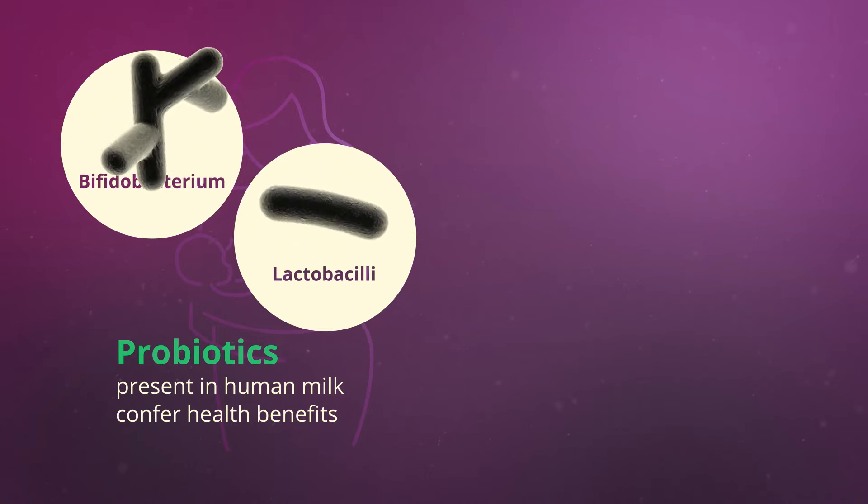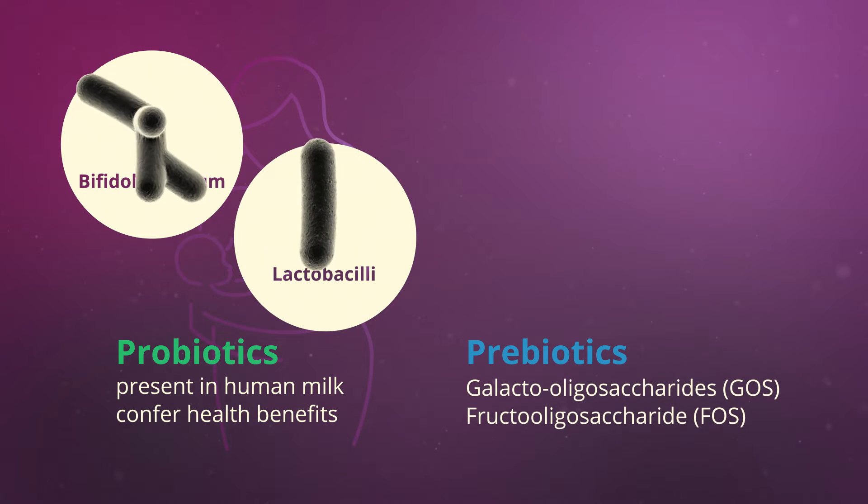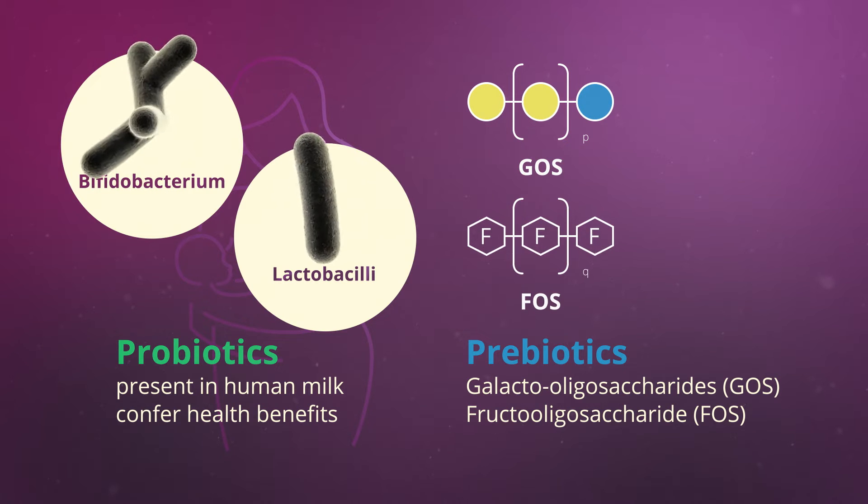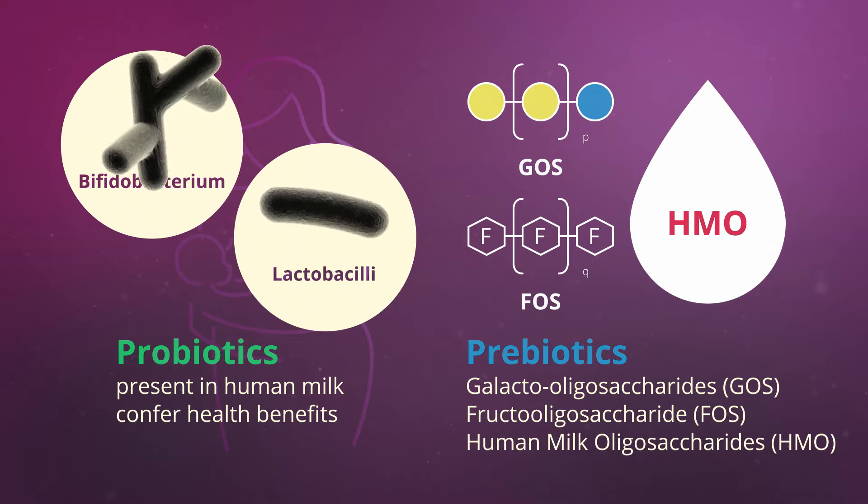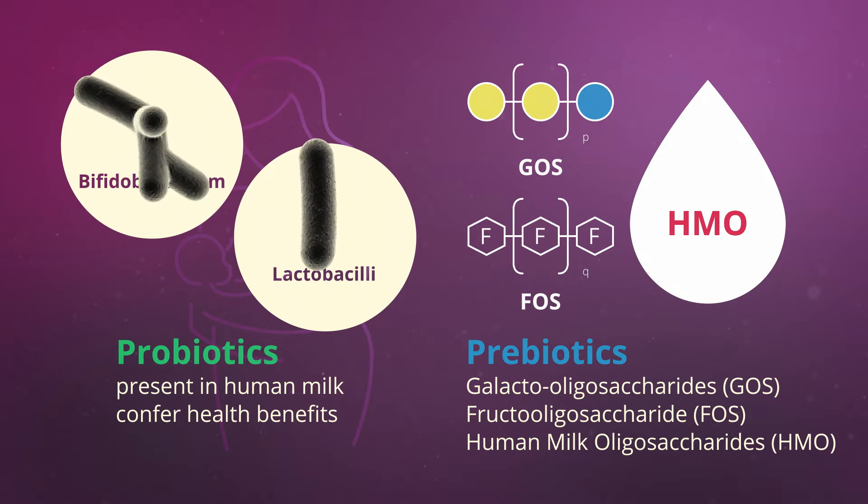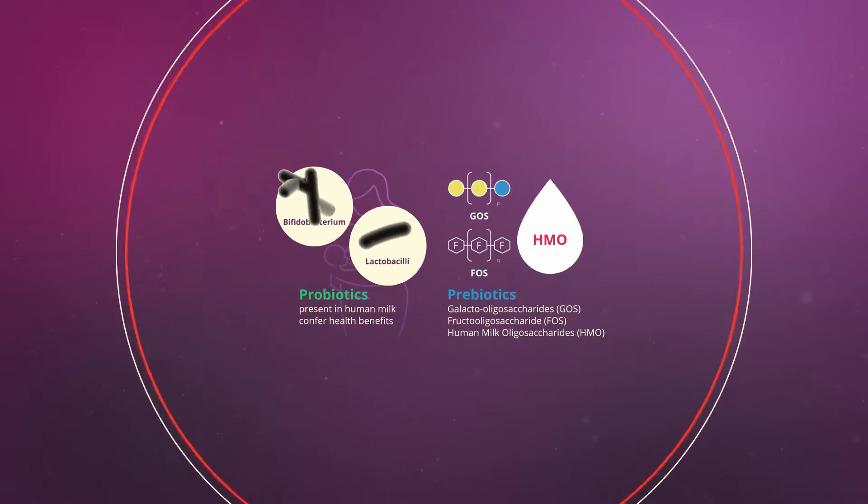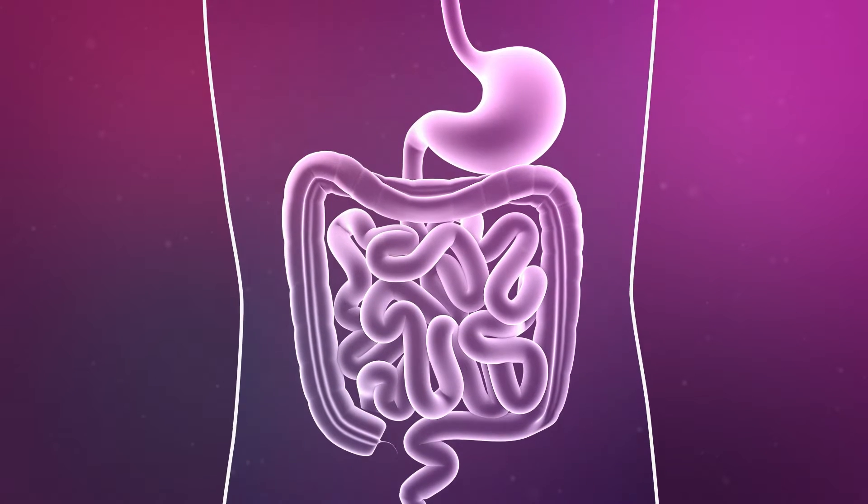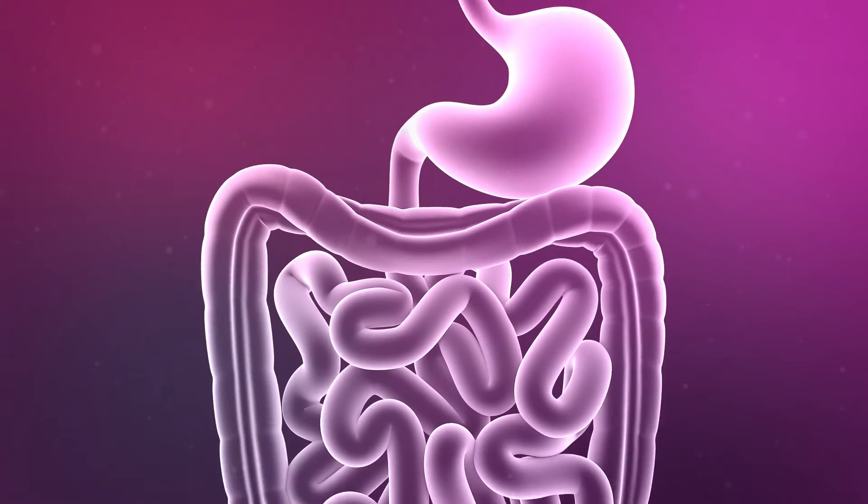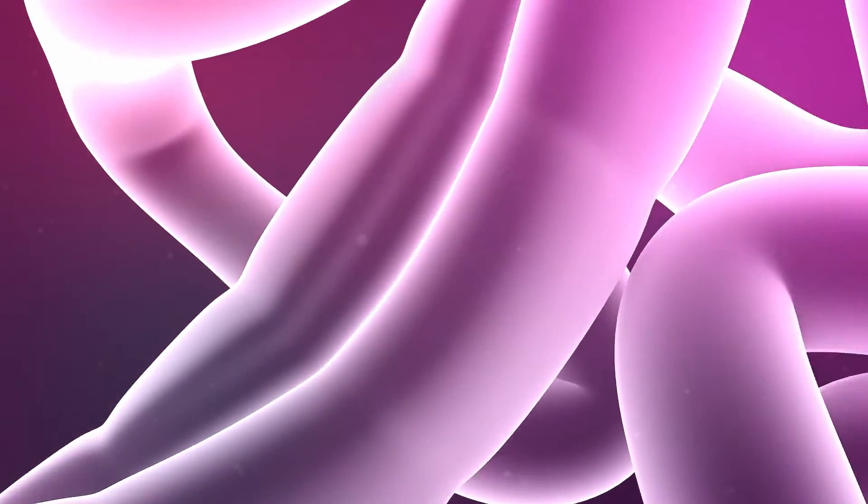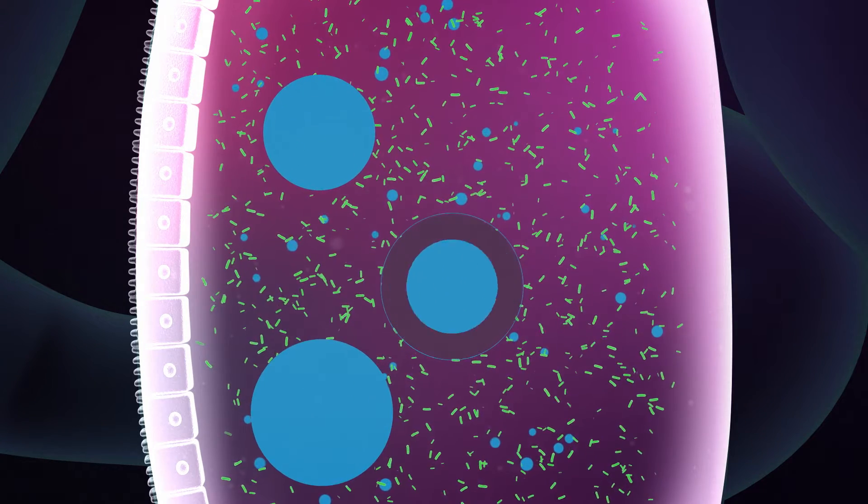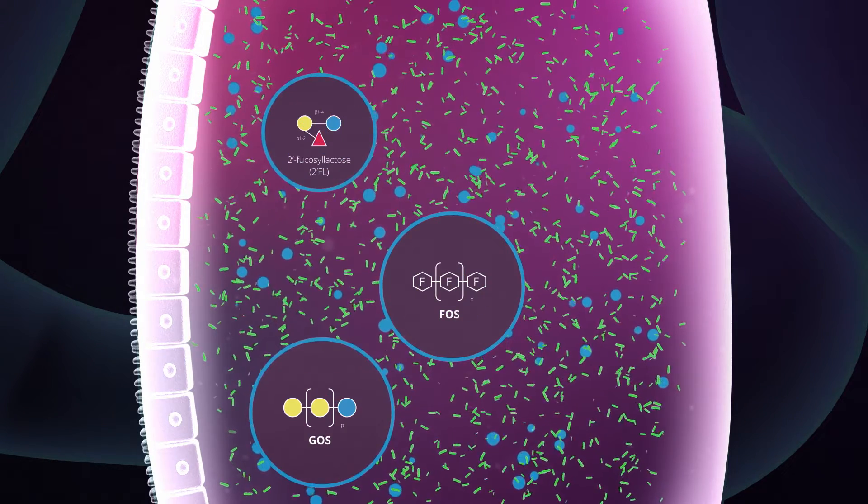These probiotics are commonly combined with prebiotics, such as galacto-oligosaccharides (GOS), fructooligosaccharides (FOS), and human milk oligosaccharides, and defined as symbiotics. Such interactions include probiotic and beneficial gut microbiome metabolism of prebiotics, leading to increased microbial numbers, colonization, and the production of health-promoting metabolites such as short-chain fatty acids.